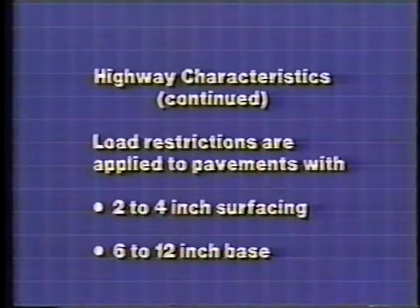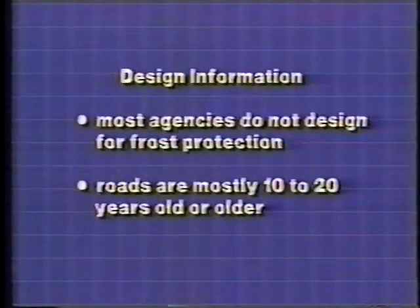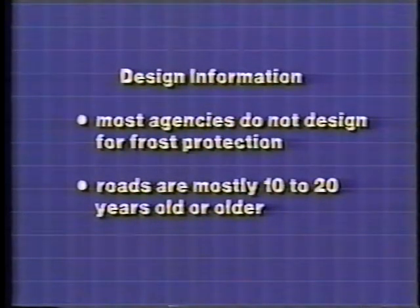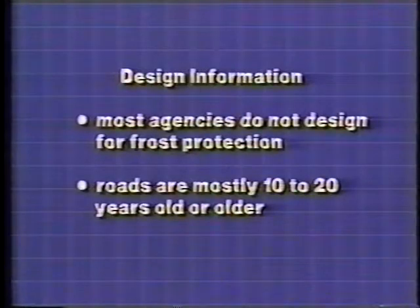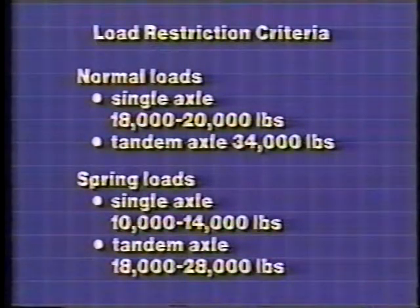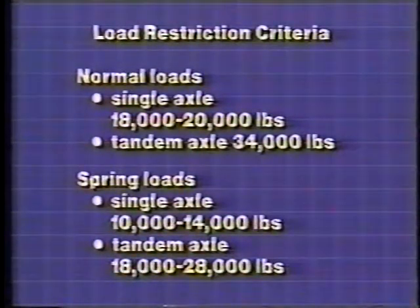Load restrictions are generally applied to pavement cross-sections ranging from 2 to 4 inches of surfacing and 6 to 12 inches of base. Thicker pavements apparently have sufficient strength to overcome the thaw weakening period. Some state agencies design pavements for partial frost protection, but most local agencies do not consider frost protection in their design procedures. The pavements that receive load restrictions tend to be 10 to 20 years old or older; in some cases they are farm-to-market roads constructed just after World War II. Normal load limits are 18,000 to 20,000 pounds on a single axle and 34,000 pounds on tandem axles.